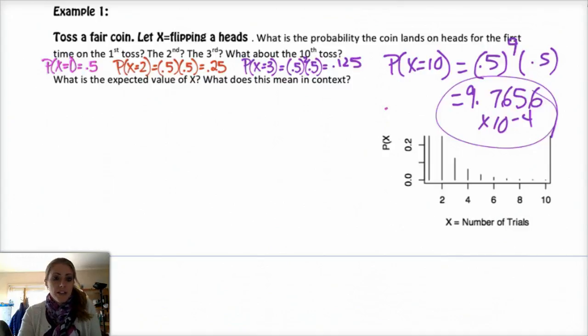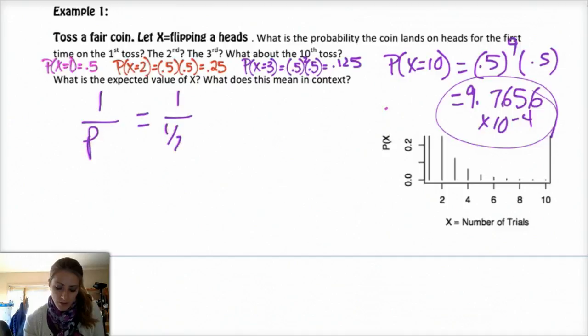Expected value, if you use the formula, it's super easy. The expected value is just 1 over the probability of success, and in this case, that's 1 over a half, or 1 over 0.5, which is 2. Which basically means that you would expect to get a head on a coin flip within two tries.